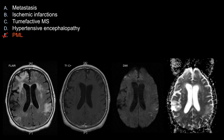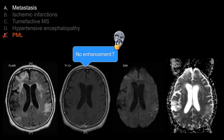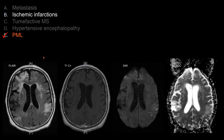Let's look at some other answers that do not work as well in this case. For metastasis, it would be very strange to have a metastasis without enhancement. For choice B, ischemic infarction, there is no evidence of restricted diffusion. There is a bright signal in DWI but no dark signal on ADC.